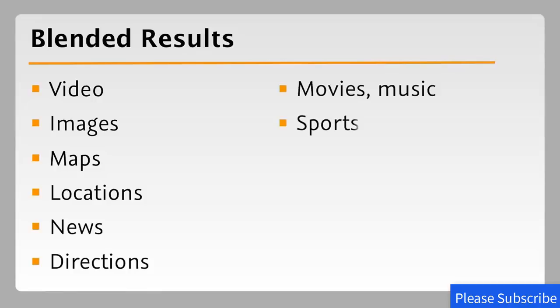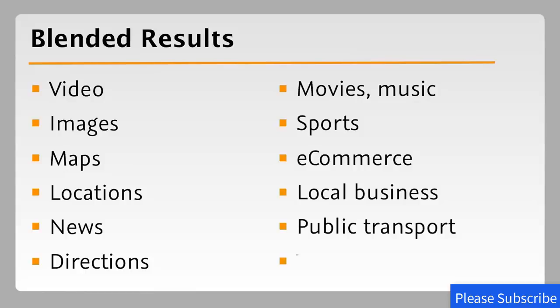Blended results can be video, images, maps, locations, news, directions, movies, sports, e-commerce, local businesses, public transport, and travel — it's invaluable. Blended search is the search engines trying to predict what it is you want and when you want it, enabling the search engine results page not to be a list of things to go find the answer, but rather the source for your answer itself.